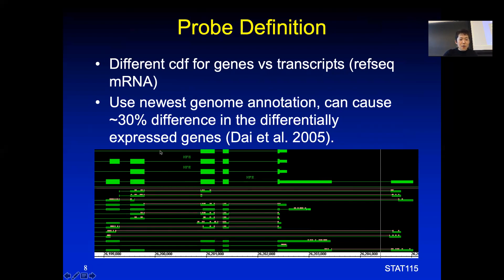In 2005, after the Human Genome Project finished, there was an update on genome annotation. When you remap the probes to the genome based on updated annotation, this can potentially cause a 30% difference in the final differential gene expression analysis. So make sure you use the newest annotation of the probe set, which is available on Bioconductor. If you have started looking at homework one, you will be asked to use Bioconductor to run an algorithm called RMA, which we'll talk about later. Make sure you use the newest annotation and also consider whether you're looking at genes or transcripts, as that requires a different CDF file.